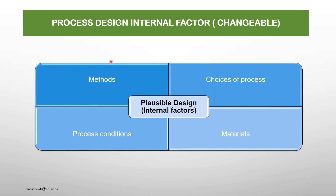Process design internal factors — changeable: methods or methodologies, choices of process, process conditions, and materials. These four internal factors can be adjusted based on operational requirements to enhance plant safety, integrity, reliability, and project quality conditions, in order to achieve our objective in designing plant operations.